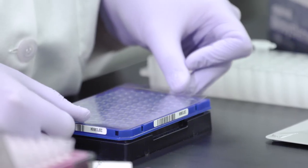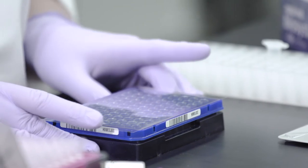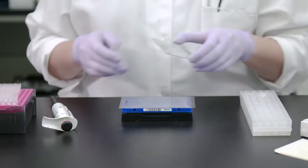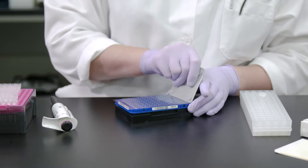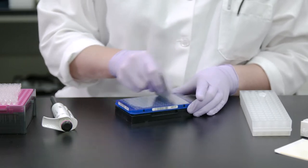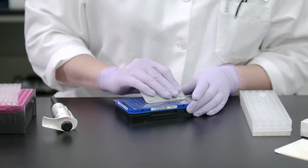Next, align the adhesive film to the plate so that all of the wells are covered. Using the adhesive film applicator, press and move the flat edge of the applicator back and forth along the long and short edge of the plate.